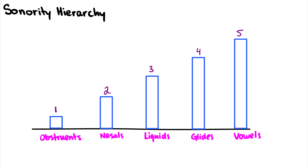If you remember from my consonant manner features video, I had these same things listed in reversed order, and we can classify all the natural classes using the syllabic, continuant, approximant, and sonorous features.